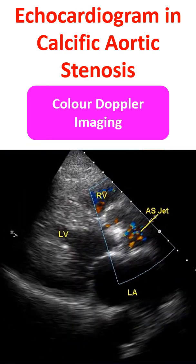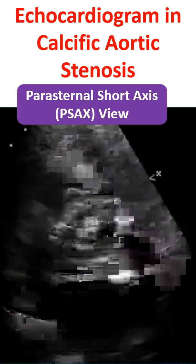Still image from parasternal long axis view with color Doppler showing the aliased jet beyond the domed and densely calcified aortic valve.